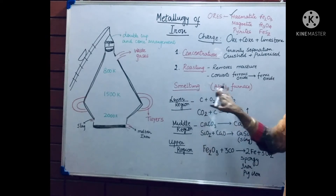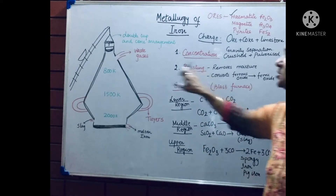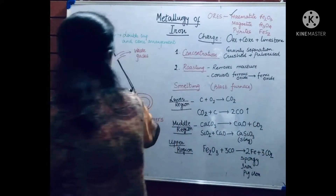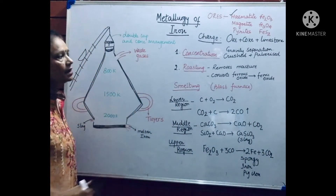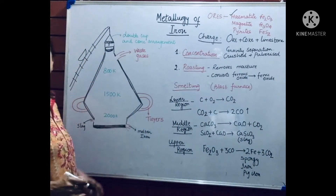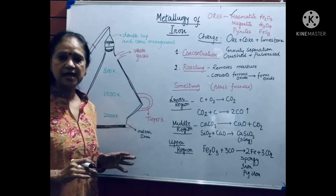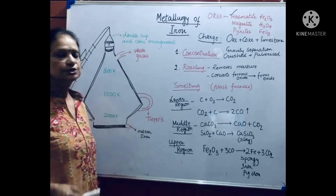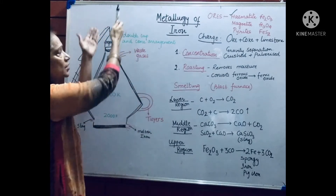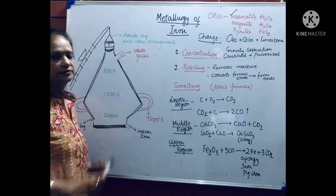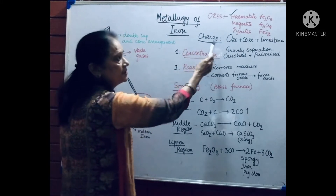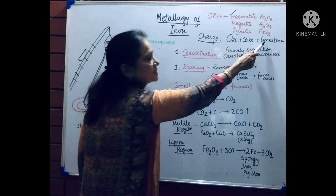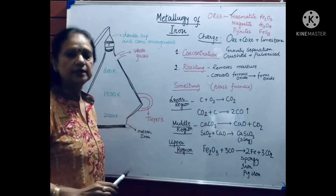Then the ore has to be sent for smelting in a blast furnace. Whatever is put inside the blast furnace is known as the charge. The charge in this case is ore plus coke plus limestone — three things are put into it.